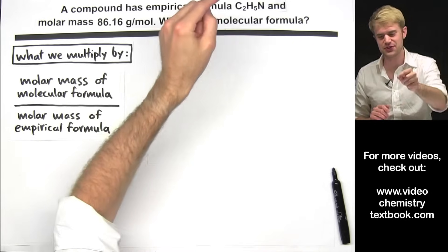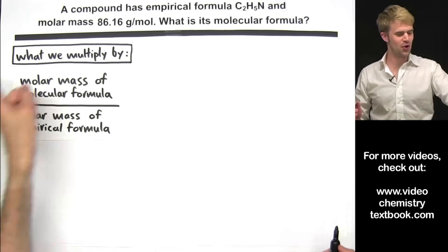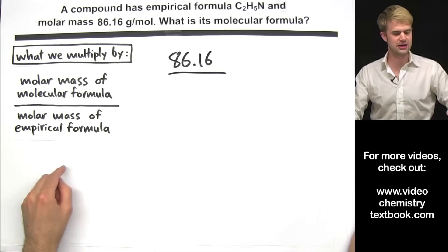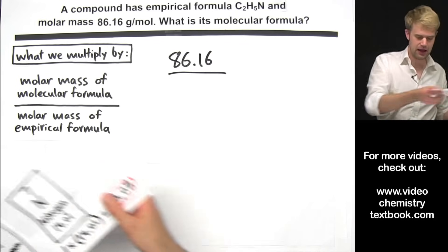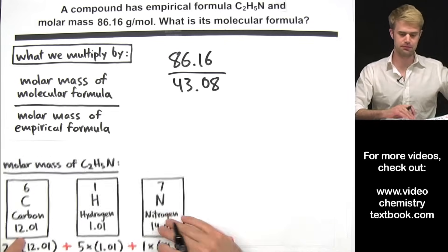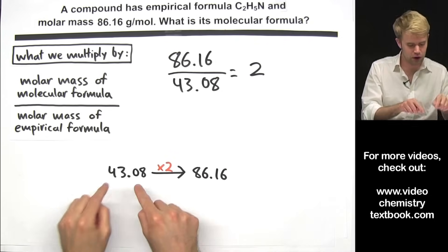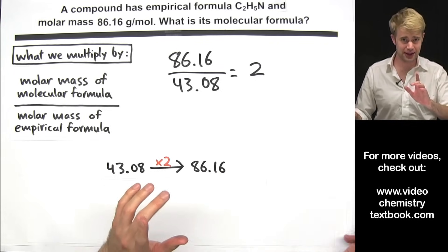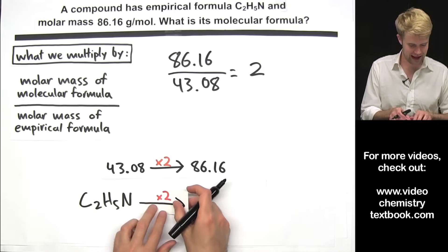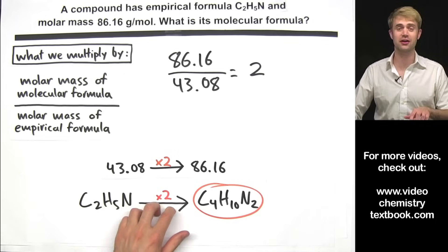A compound has empirical formula C2H5N and molar mass 86.16 grams per mole. What is its molecular formula? We take 86.16 and divide it by the molar mass of the empirical formula C2H5N, which I've calculated to be 43.08. We divide 86.16 by 43.08 and get 2. So 2 is what we multiply the empirical formula by to get the compound's molar mass.